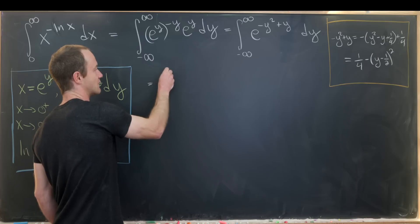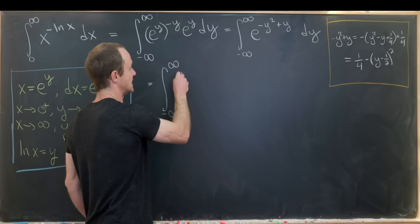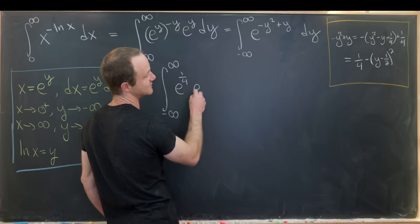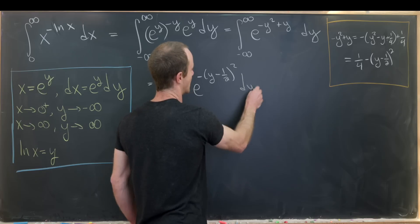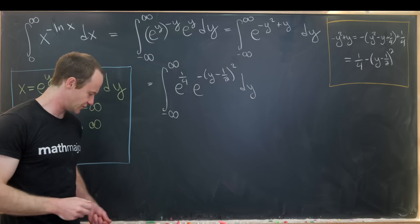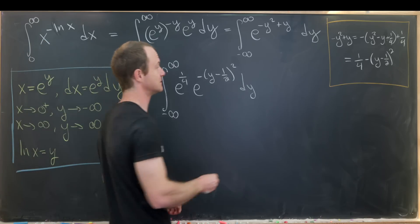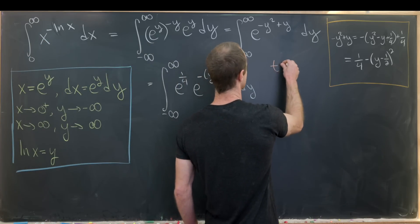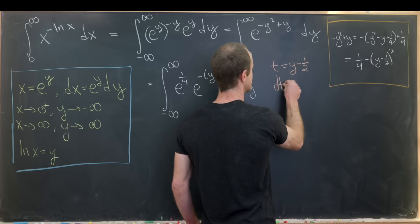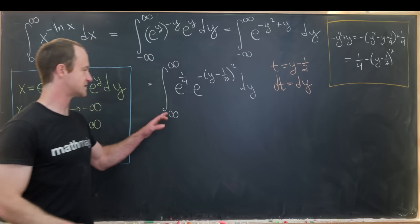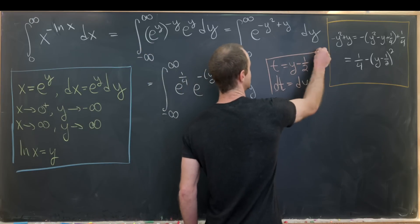So that allows me to rewrite my integral as the integral from minus infinity to infinity of e to the quarter times e to the minus y minus half squared dy. And I'm going to do one more substitution, although this one maybe isn't quite as necessary because it doesn't really change much. I'll just take my substitution t equal to y minus half. Notice that dt is equal to dy. And furthermore, since my bounds of integration are minus infinity and plus infinity, they will not change.